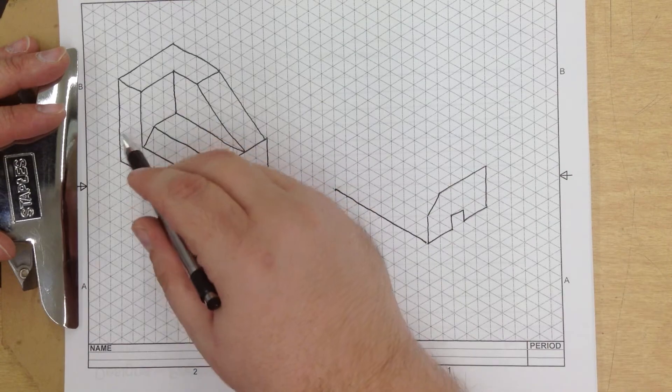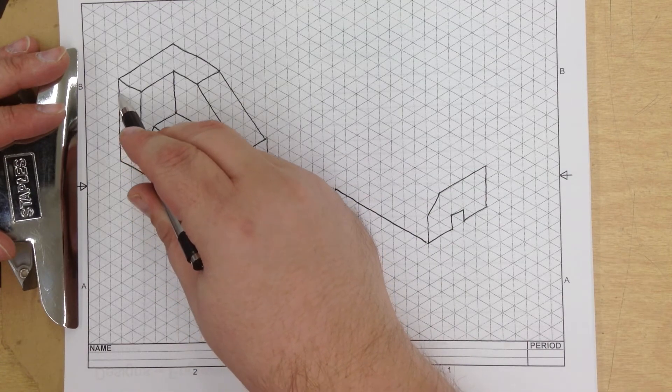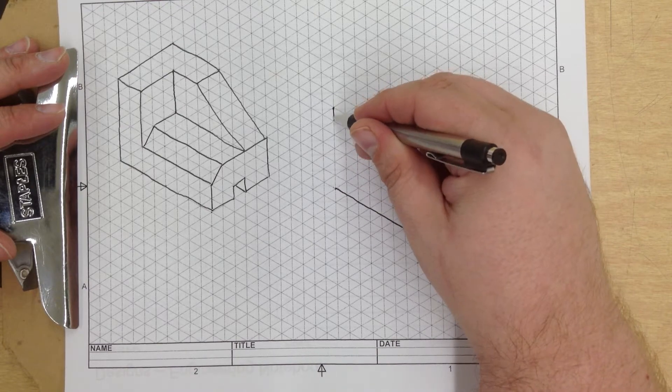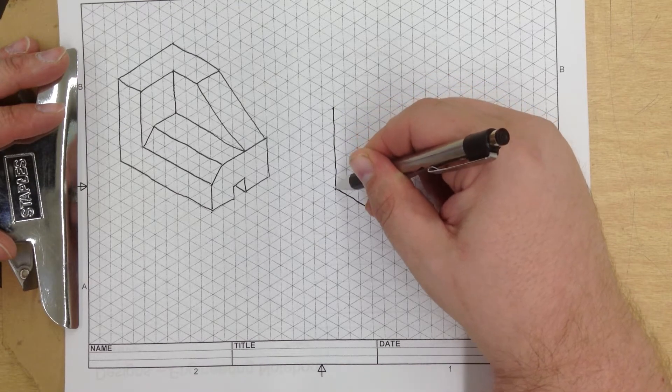Connect the line. And one, two, three, four, five, six up. One, two, three, four, five, six. Up. Just like so.